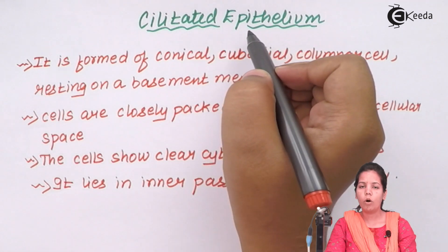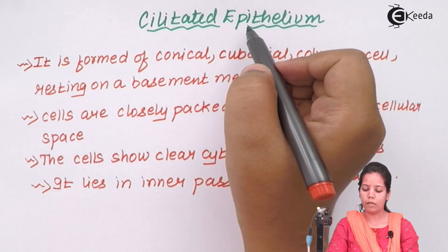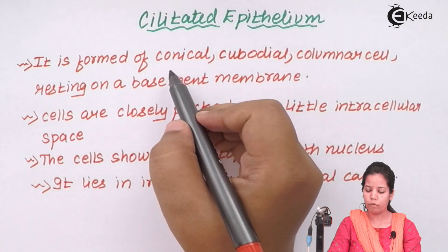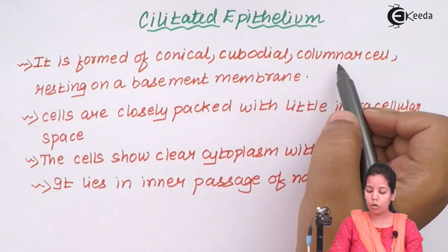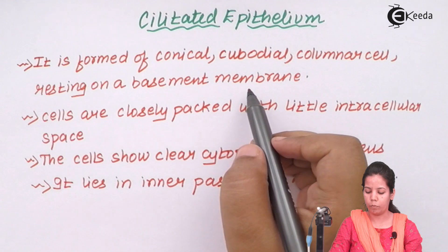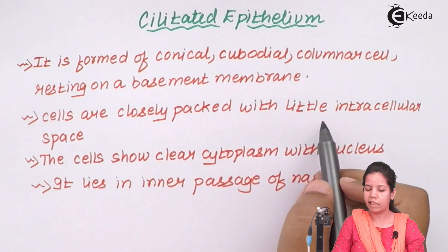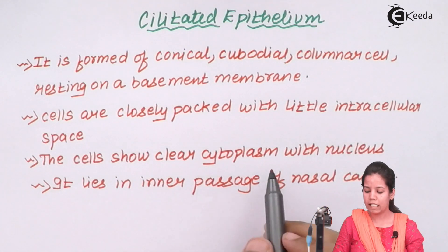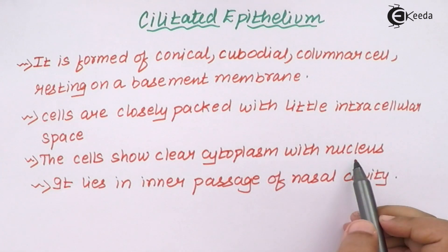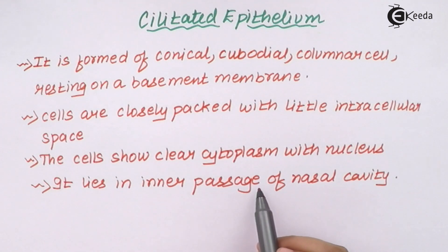Ciliated epithelium is a type of simple epithelium formed of conical, cuboidal, or columnar types of cells that lie on a basement membrane when observed under a microscope. The cells in this region are closely and adherently packed with little or almost negligible intracellular spaces. These intracellular spaces are never filled with matrix or ground substance. They show almost clear cytoplasm with a distinct nucleus under the microscope, and they lie in the inner passage of your nasal cavity or nostrils.